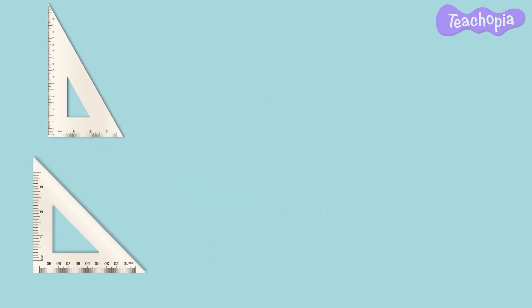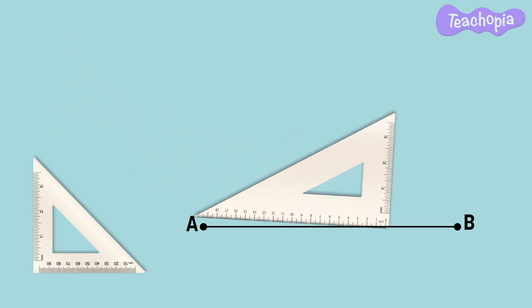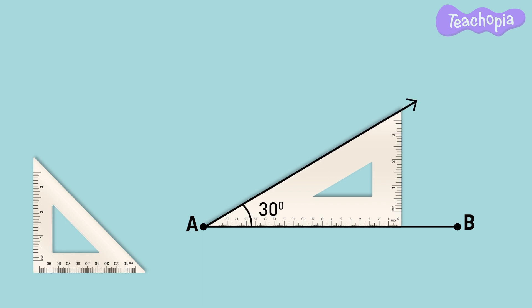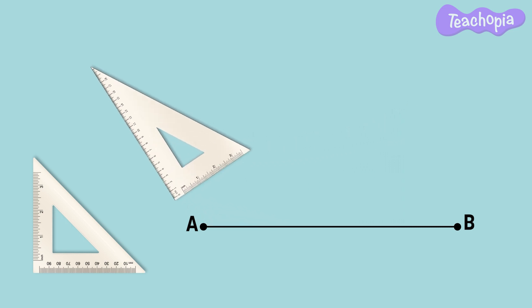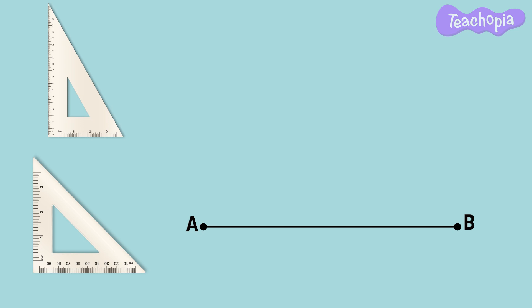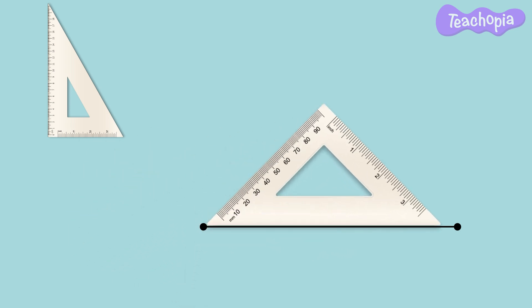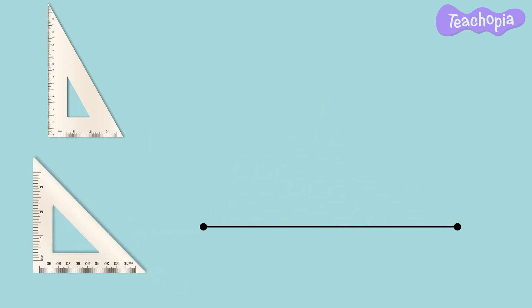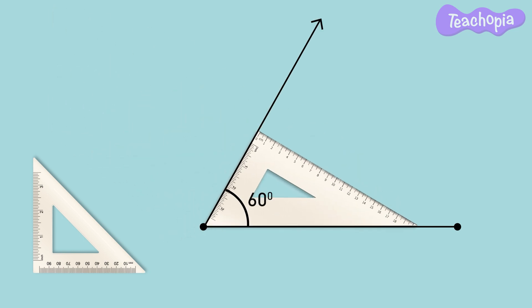Let us see how. Draw a line from point A to point B. If we need to make a 30 degree angle at A we use the 30, 60, 90 degree set square. If we need to make a 45 degree angle we use the 45, 90 degree set square. Using the 45 degree angle of the set square we can easily create the angle. Similarly if we need to create a 60 degree angle we use the 30, 60, 90 degree set square.